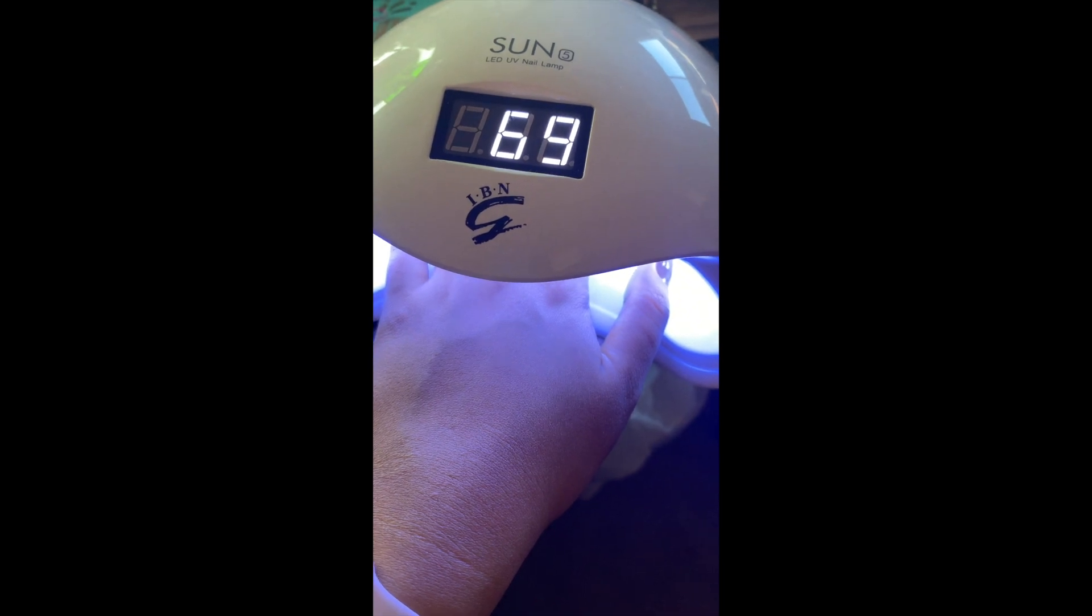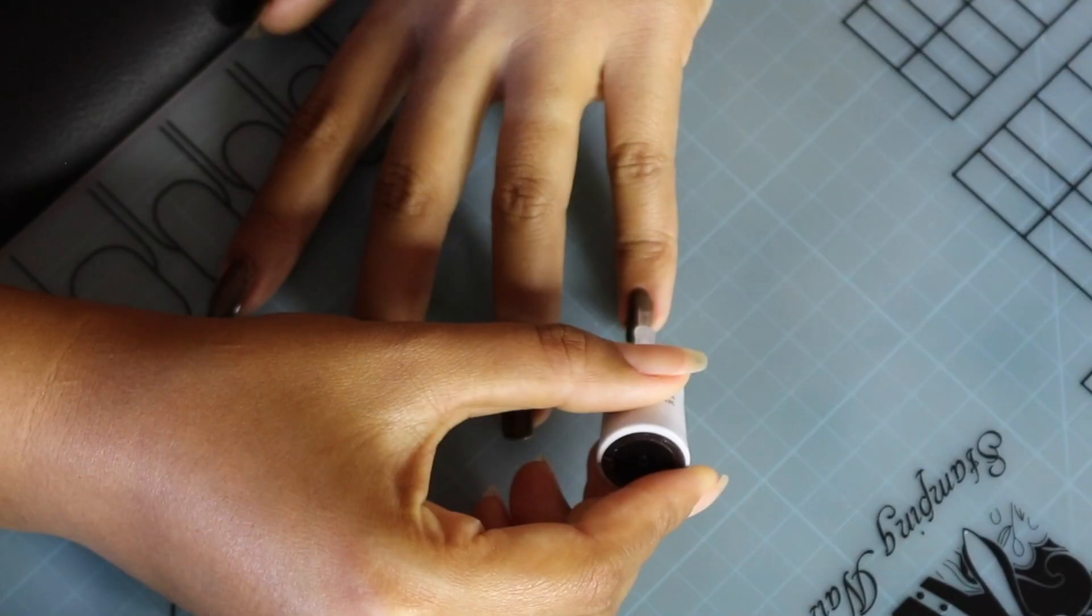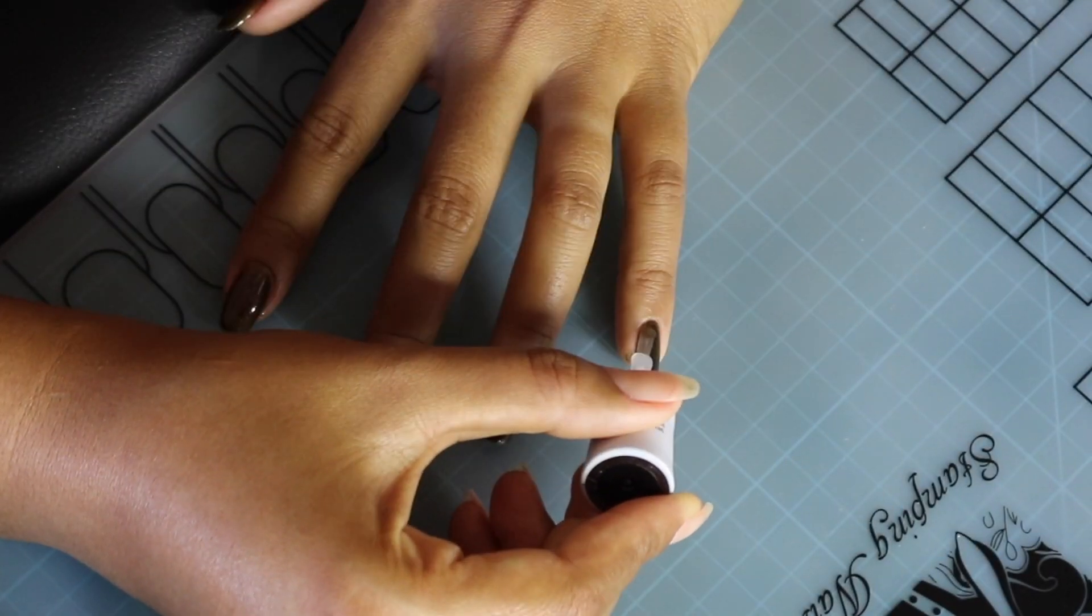Third step is the top coat. We will apply it the same way, same routine. Edge first before going to the middle.